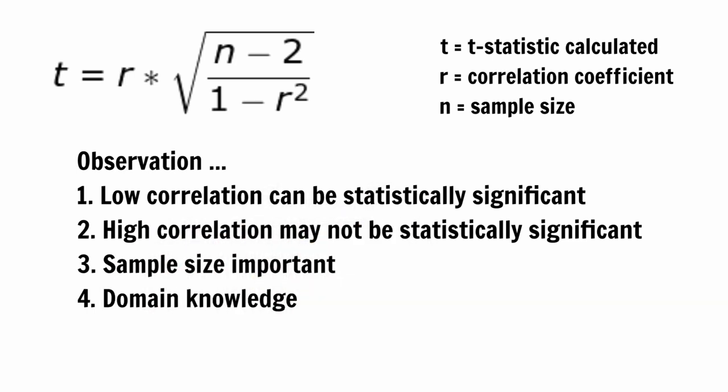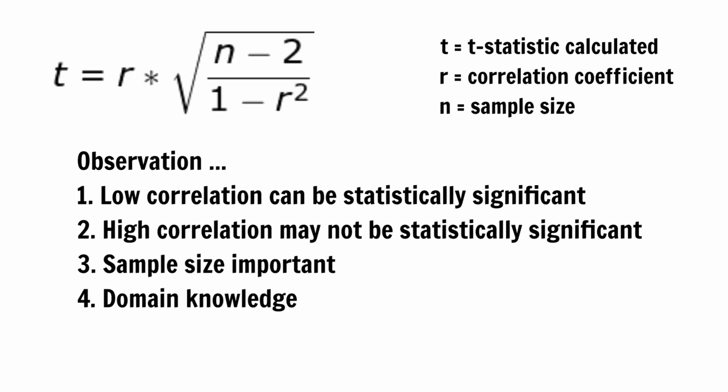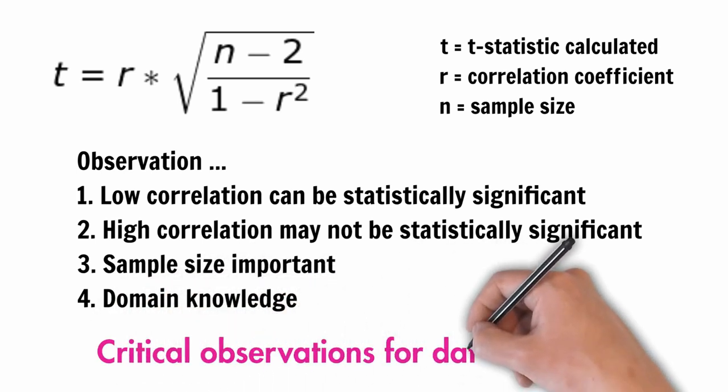Finally, hence, along with statistical understanding, a solid and a strong understanding of the domain under study is necessary. These are very critical observations when we undertake data modeling and are trying to freeze on features to be included or excluded from the model. Understanding of correlation coefficient and statistical significance of the coefficient plays a very important role in data modeling.